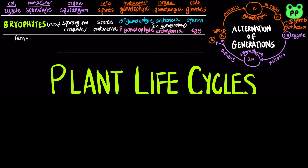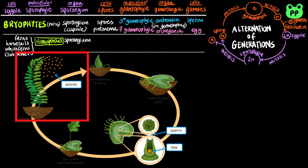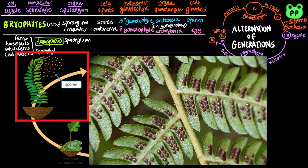Most seedless vascular plants are homosporous, including all the monilophytes — ferns, horsetails, and whisk ferns — as well as club mosses from lycophytes. In the life cycle of ferns, the sporangia are located on leaves known as sporophylls. Sporangia are arranged in clusters known as sori.